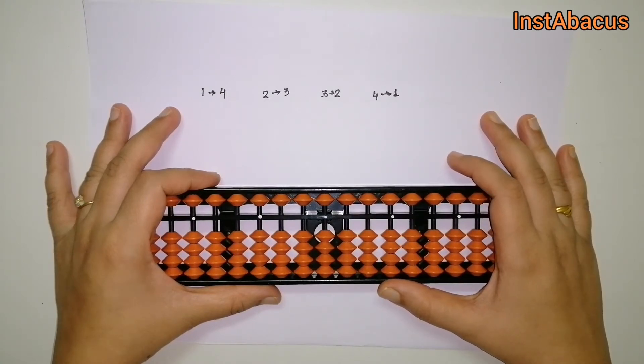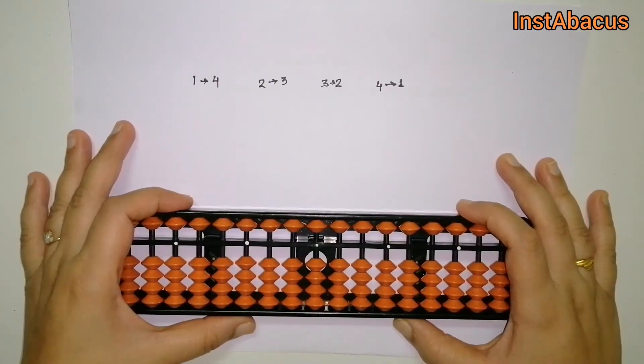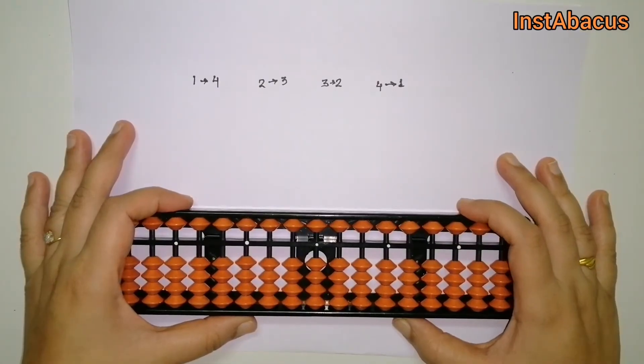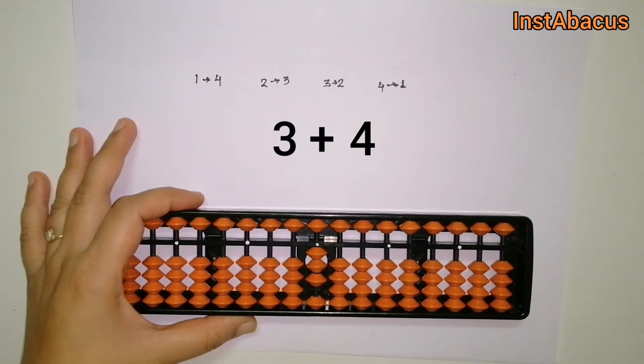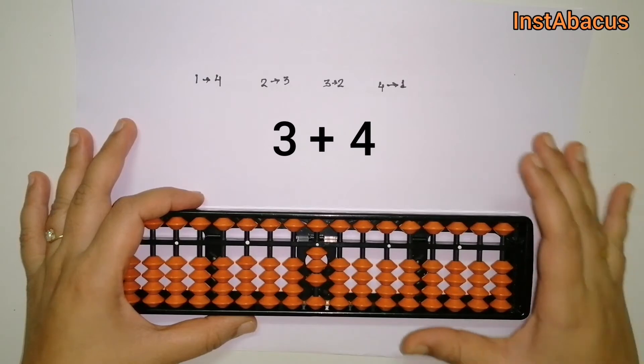If we have to add 3 plus 4, let's see how to do that. So this is 3 on our abacus right now. We have to add 4 to it, but we don't have enough earthly bits, right? So how are we going to add that?